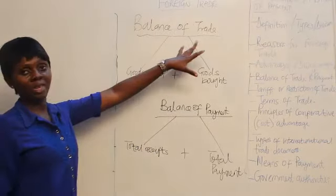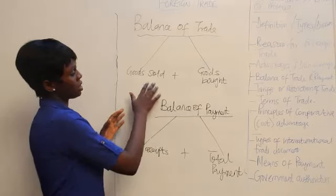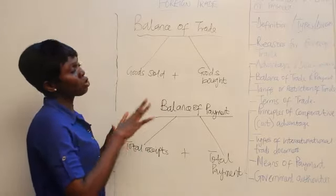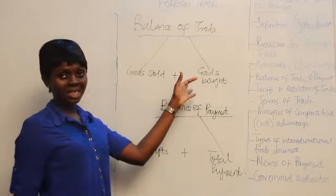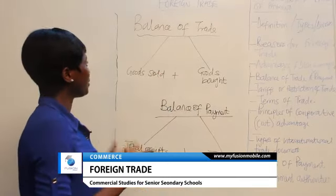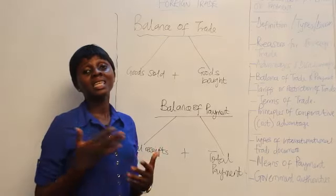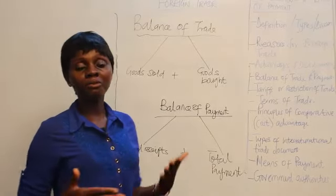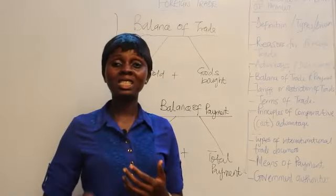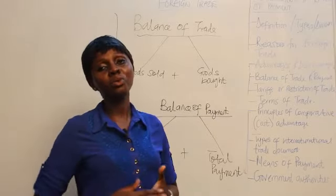Now we're looking at balance of trade and balance of payments. Balance of trade is the total value of goods sold plus goods bought within a particular period, usually a year. We have a favorable balance of trade — when a country is exporting more than it is importing. And an unfavorable balance of trade — when a country is importing more than it is exporting.